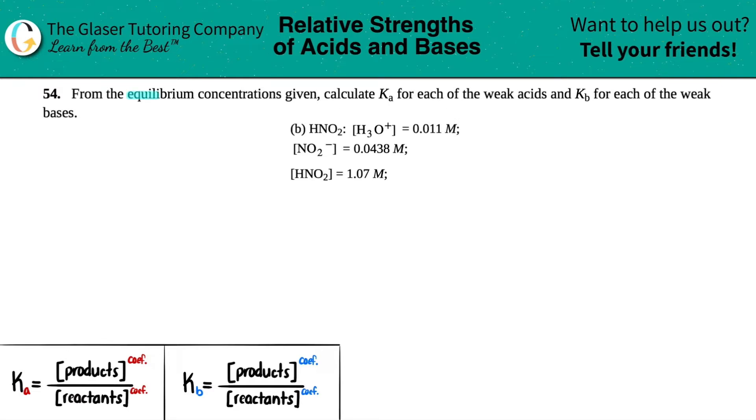Number 54. From the equilibrium concentrations given, calculate Ka for each of the weak acids and Kb for each of the weak bases. And then we have letter B out of the bunch.